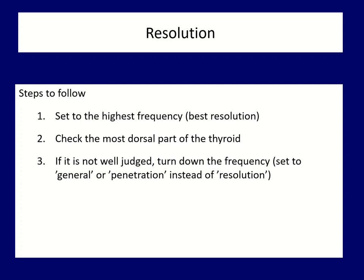We should check whether lowering the frequency significantly improves visibility of the dorsal part of a lobe. Occasionally, we can examine the ventral and dorsal parts with different frequencies — higher for the ventral and lower for the dorsal parts.